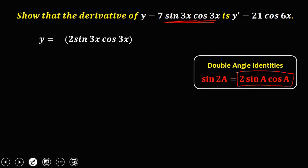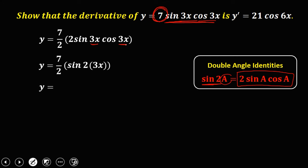So y is now equal to 2 sine 3x cosine 3x. Since we multiplied 2 to sine and cosine, we need to divide the numerical coefficient by 2, giving us 7 over 2. Then using the double angle identity with a equal to 3x, y is equal to 7 over 2 times sine 6x, because 2 times 3x equals 6x.